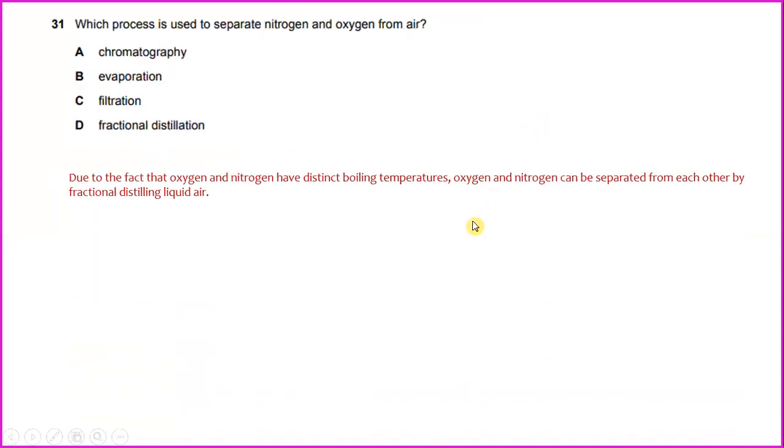Which process is used to separate nitrogen and oxygen from air? Due to the fact that oxygen and nitrogen have distinct boiling temperatures, oxygen and nitrogen can be separated from each other by fractional distillation of liquid air. So the answer will be D.